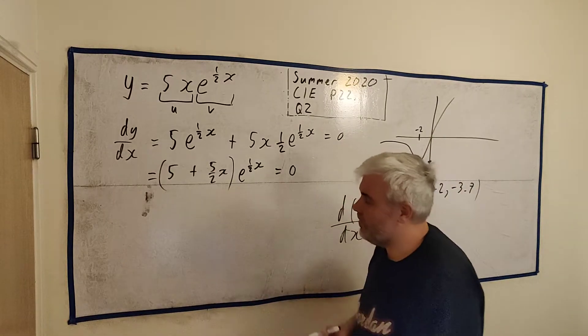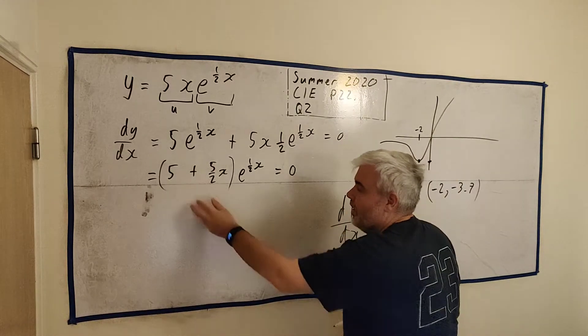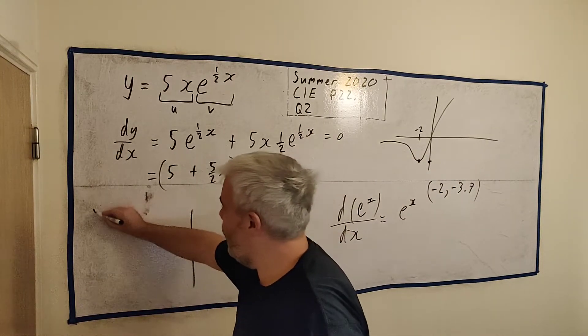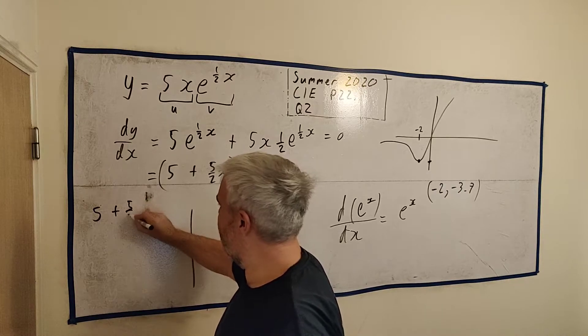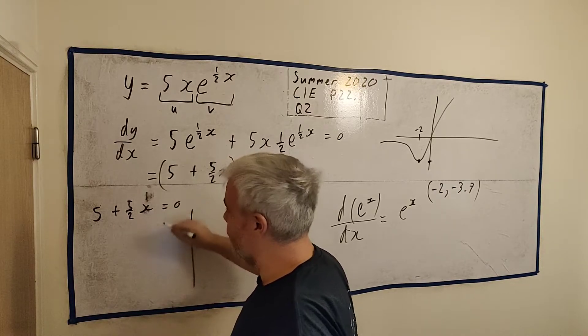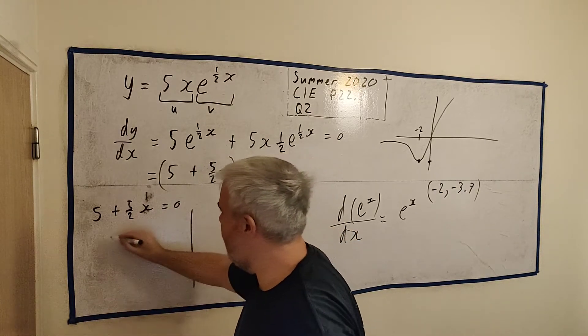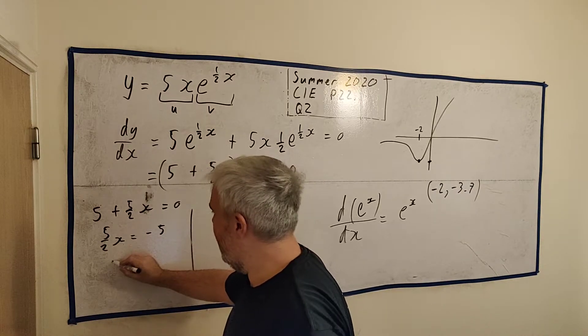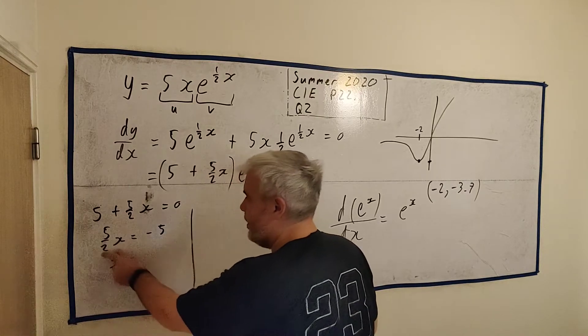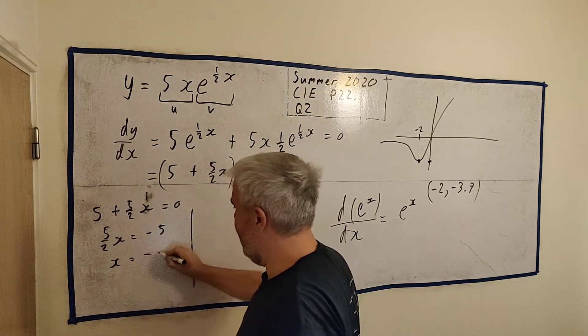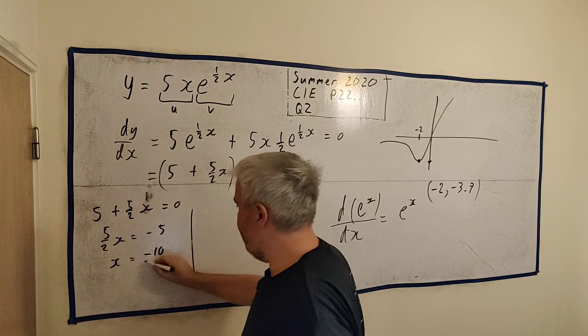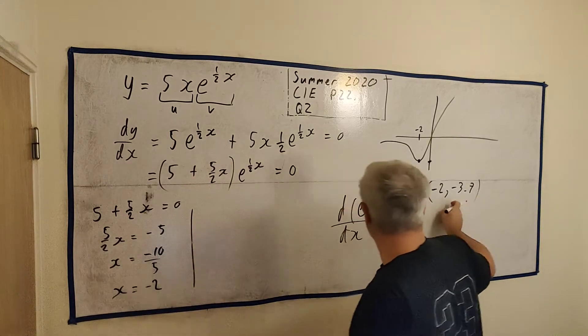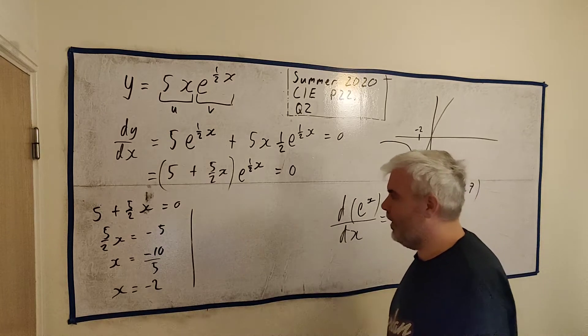We have two things multiplied here. Two answers we'd get. Let's split it into half here. One answer would be five plus five over two x equals zero. Let's go ahead and solve this now. Five over two x equals minus five. And x is equal, let's see, two times minus five is minus ten divided by five. So x is equal minus two. That's good because our picture said we'd get minus two.